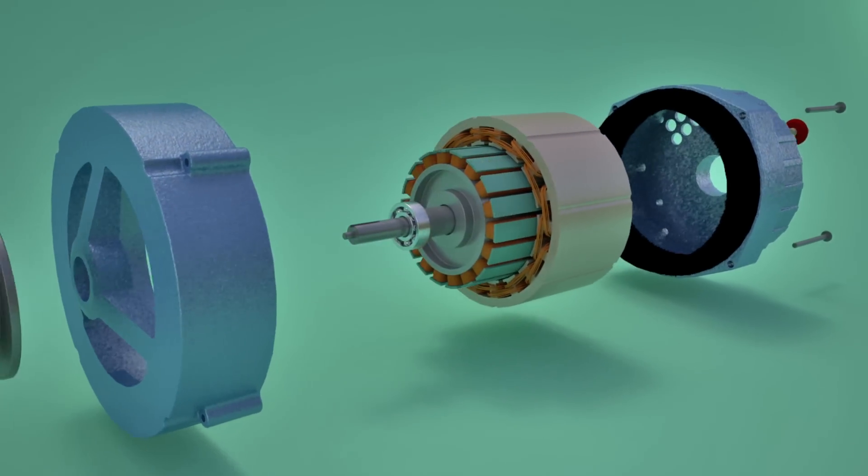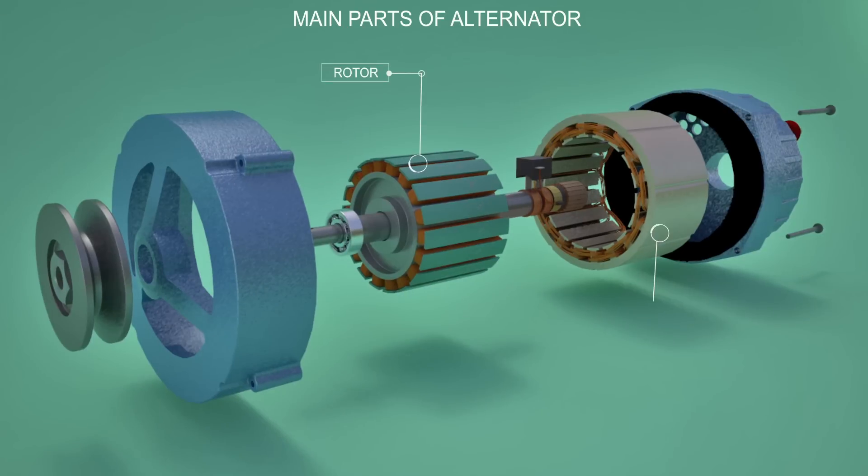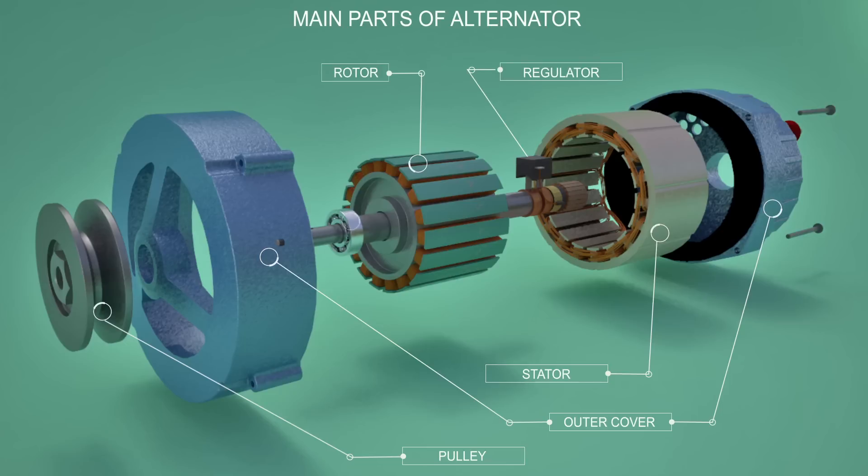Main parts of alternator are: Rotor, Stator, Bearing, Slip ring, Regulator, DC generator, Pulley, and Outer cover.